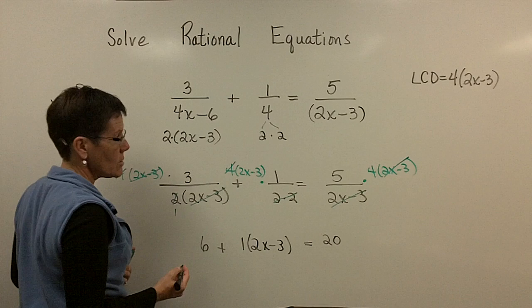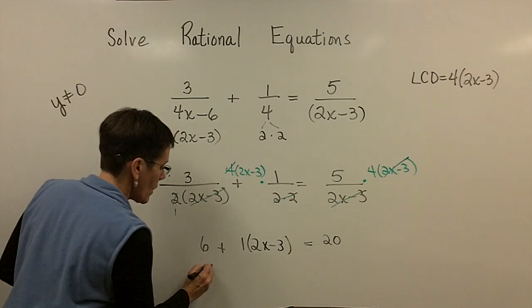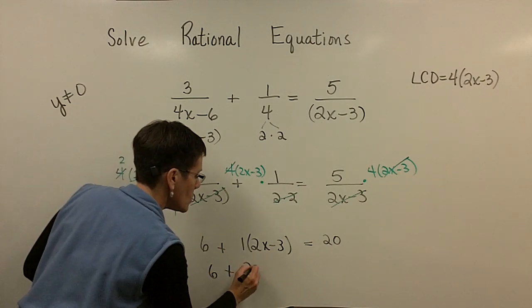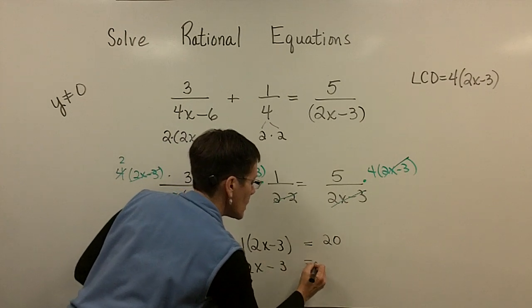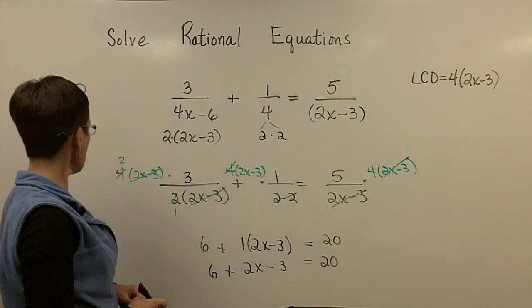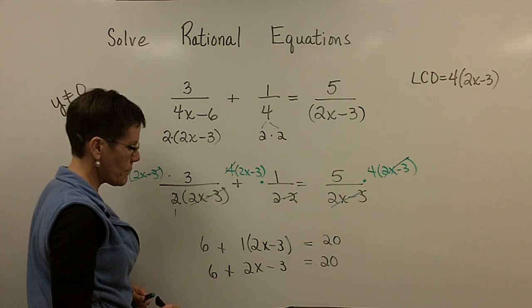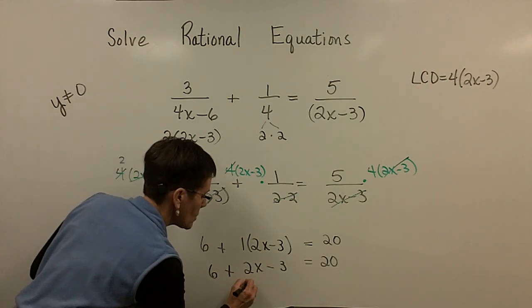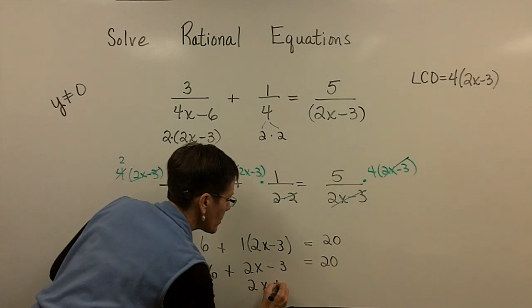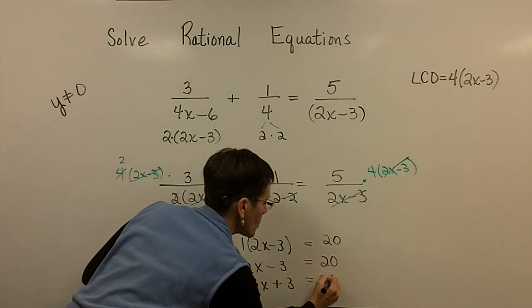And finally, I'm in a situation where I just have to solve a linear equation. So I have 6 plus 2x minus 3 equals 20. I'm looking for some space here. The 6 minus the 3 is a 3. I think I can pull this off. Let's go 2x plus 3 equals 20.